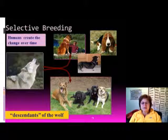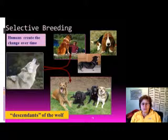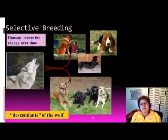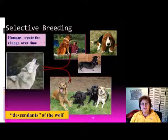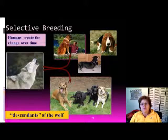This is the fourth segment of evolution. Continuing the topic of selective breeding, humans can really change things around. Here you can see all the different kinds of dogs originally coming from the wolf, so we are capable of changing a whole lot of things.